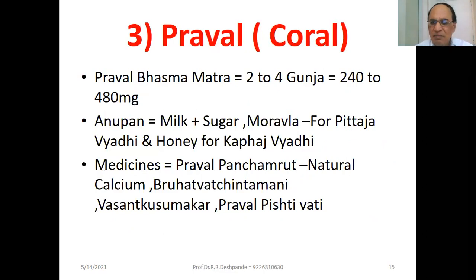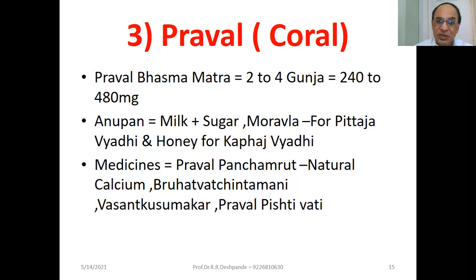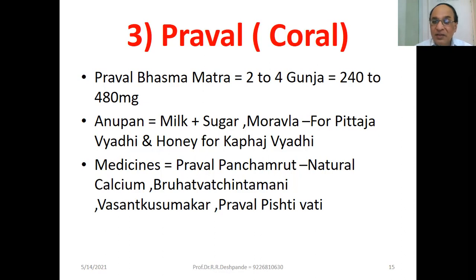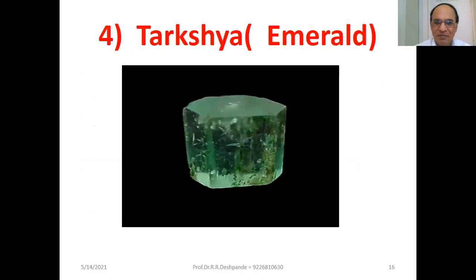Praval-Bhasma dose: 2 to 4 Gunja, that is 240 to 480 milligram. Anupan is milk, antacid, plus sugar and morala for Pitta diseases, and honey for Kapha diseases. Medicines: Praval-Panchamrut (natural calcium), Bruhat-Vat-Chintamani, Vasanta-Kusumakara-Rasa, and Praval-Krishi-Vati.